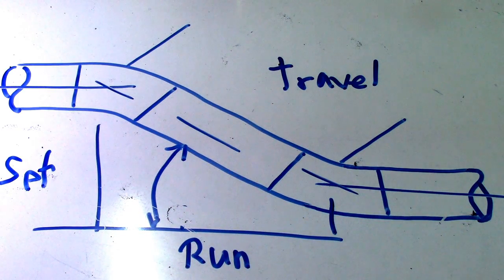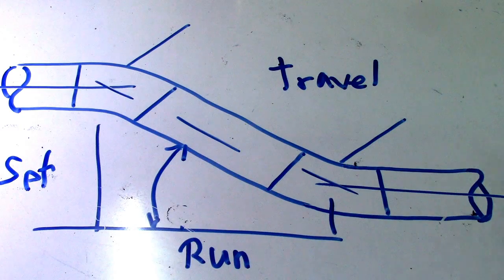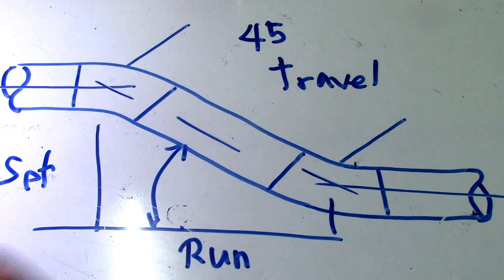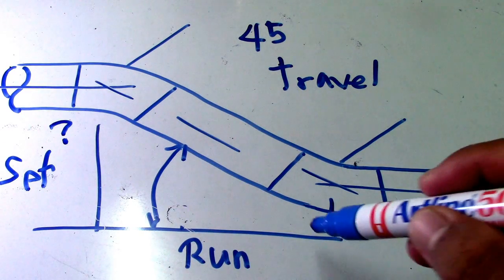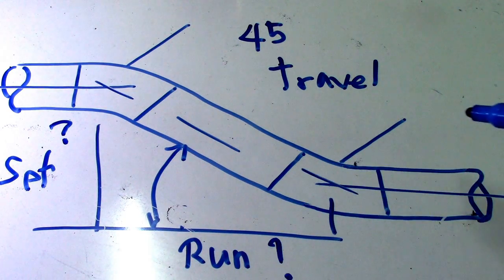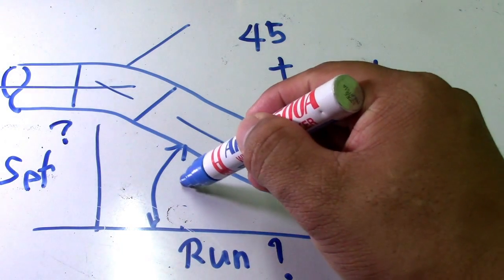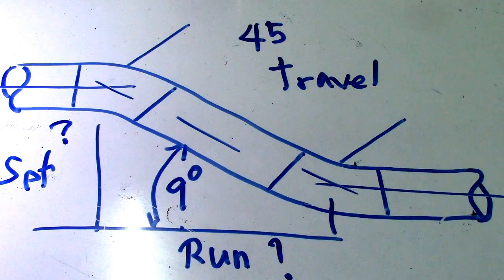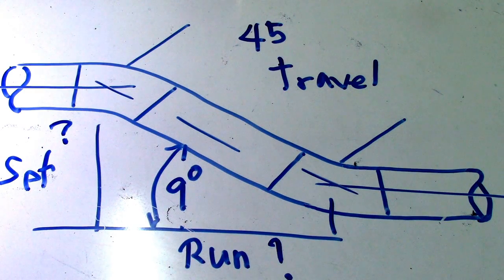Let's say I have a question for you. The given is travel = 45, and the question is to find set and run. The given angle is 9 degrees. First we will compute the set, then the run.